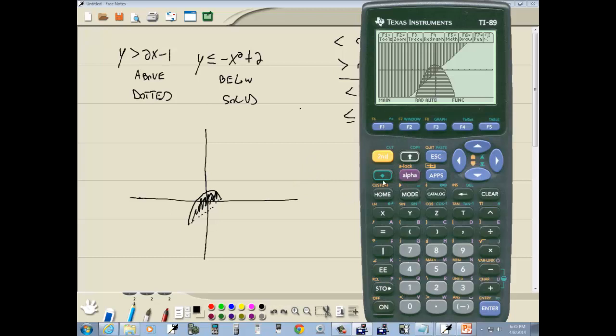Now if I go back to my y equals, I do diamond F1. You can press clear on this. Up arrow. Press clear on this. Then if I go back to my graph, diamond F3. See the shading goes away. And then you're back to where you were in terms of the graphing.